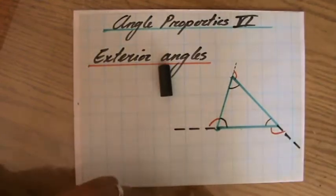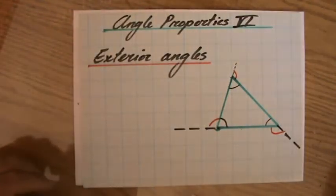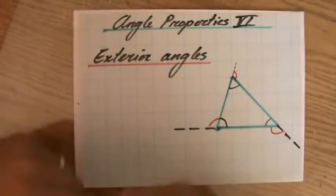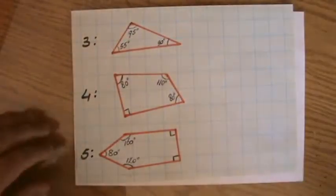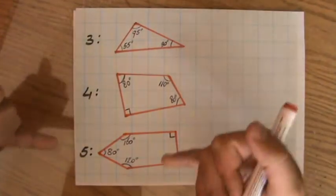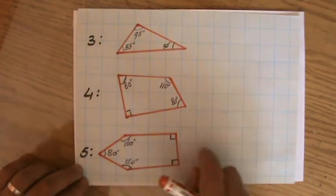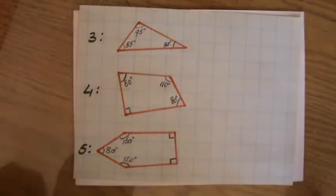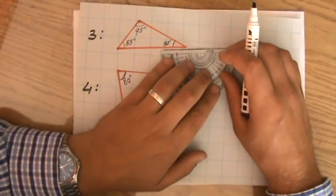What is the sum of the exterior angles? That is something we're going to discover now. I have three examples here - I sketched a triangle, a quadrilateral, and a pentagon, and I wrote down the interior angles, the size of the interior angles.